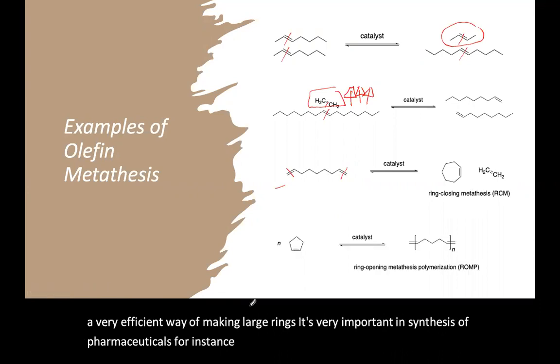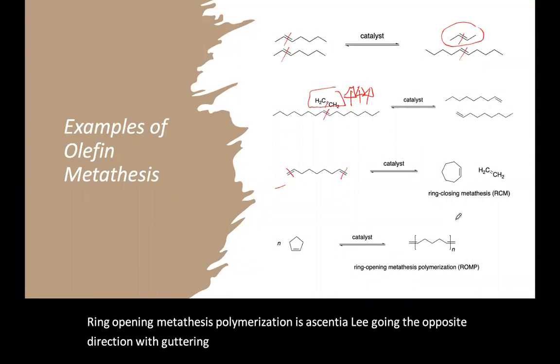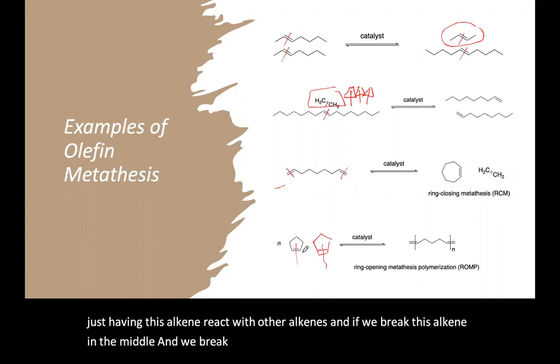Finally, ring opening metathesis polymerization is essentially going the opposite direction. We've got a ring already and we're opening it up. But this time, we are just having this alkene react with other alkenes. And if we break this alkene in the middle and break this alkene in the middle, and we have these two ends connect to each other and connect to another one over here and so on,